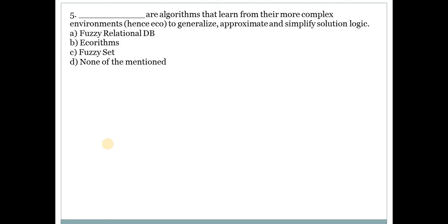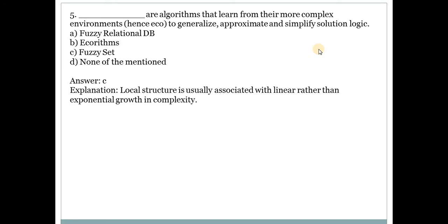Fifth question: What are algorithms that learn from their more complex environments to generalize, approximate and simplify solution logic? Answer is C, that is fuzzy set. Local structure is associated with linear rather than exponential growth in complexity.